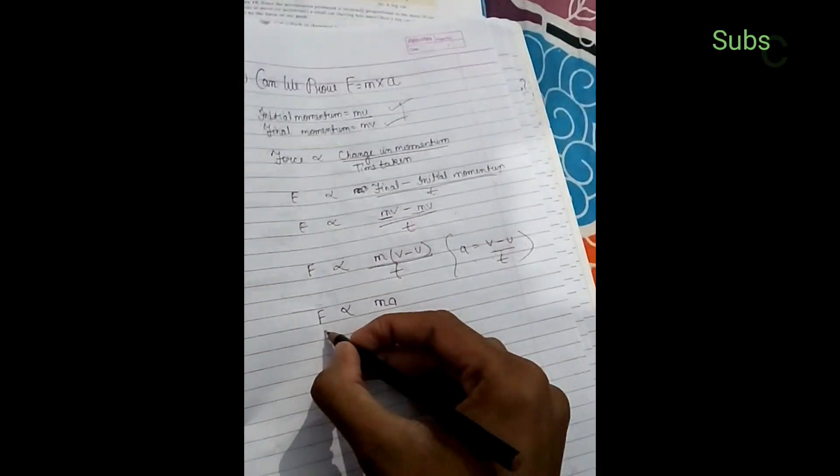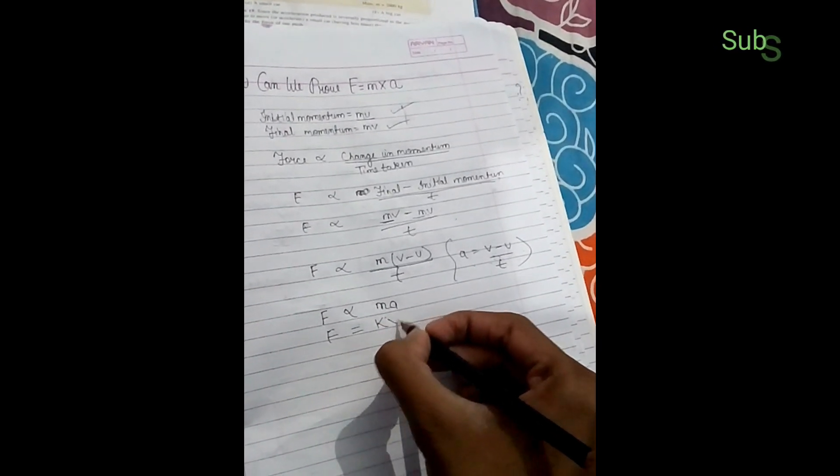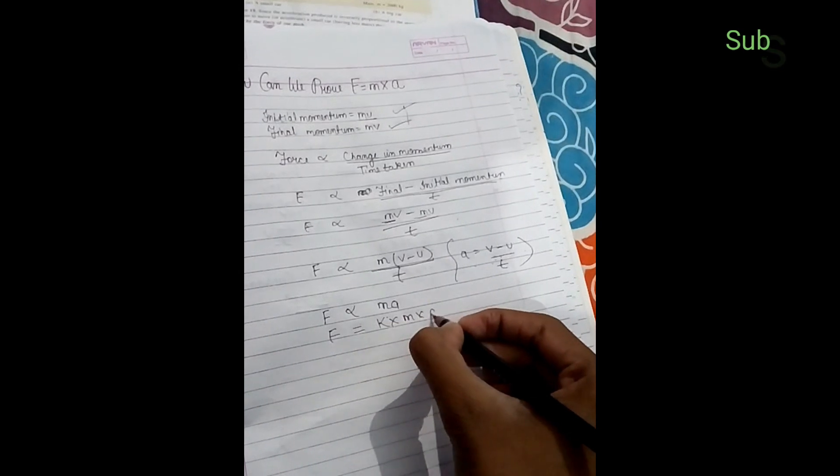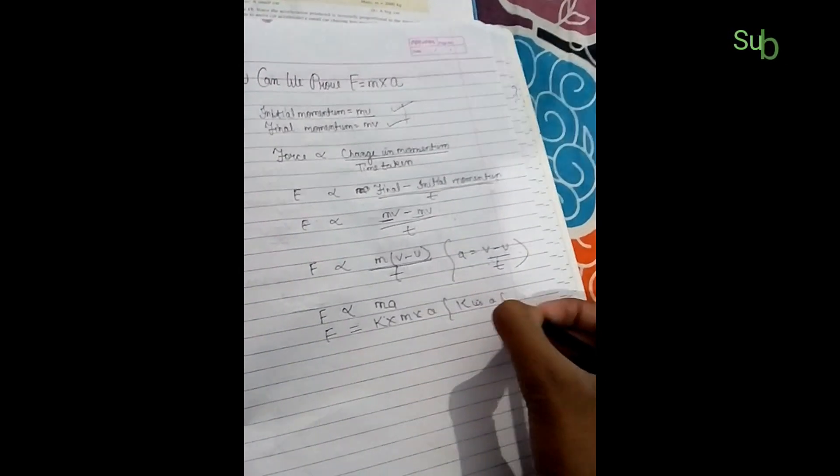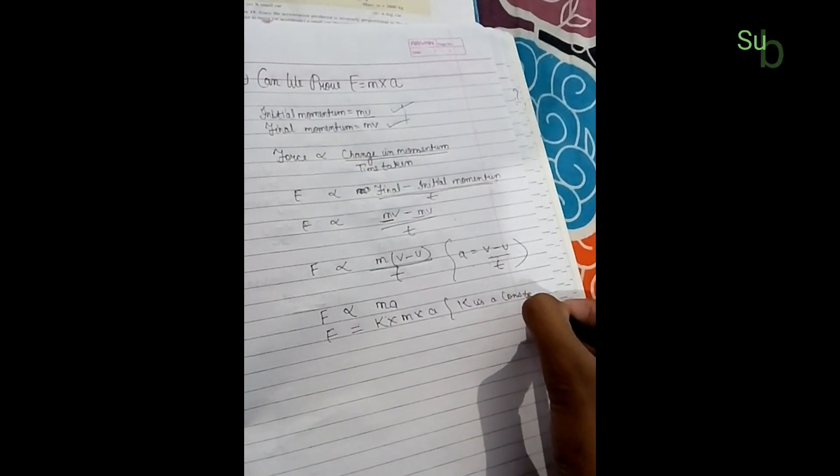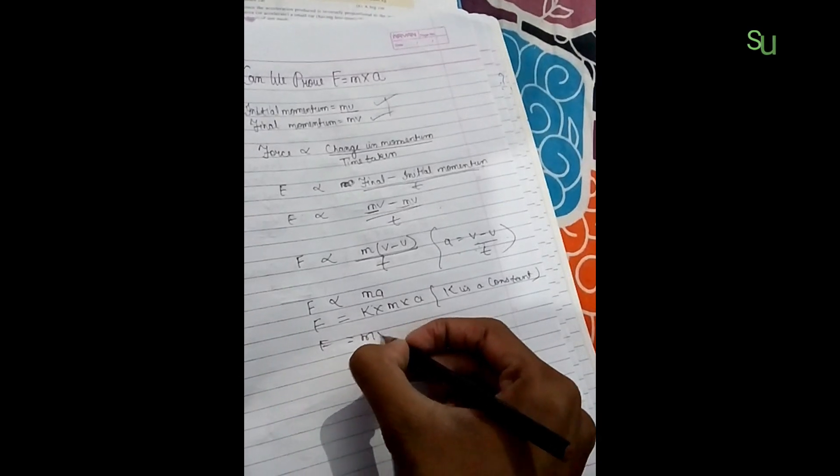So here we have F equals constant into m into a, where K is a constant. F equals K into ma. Since K equals one, F equals ma.